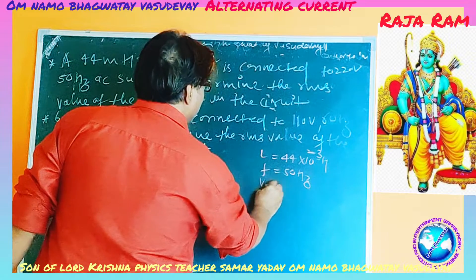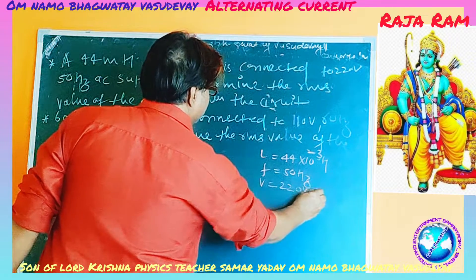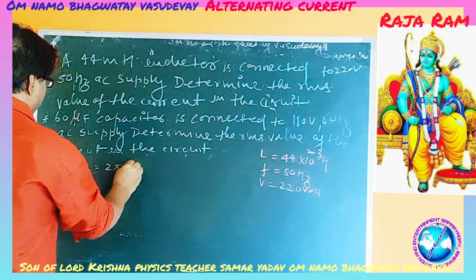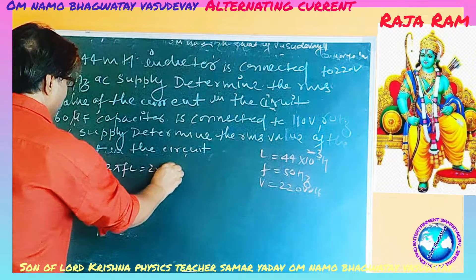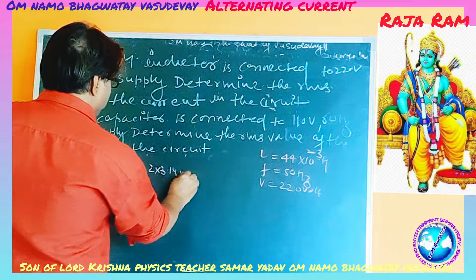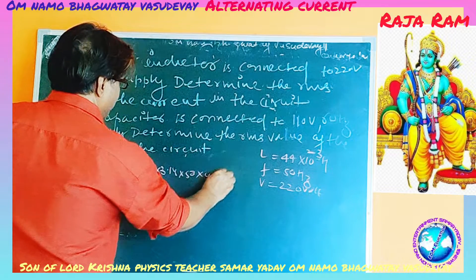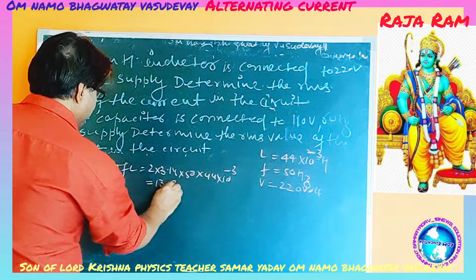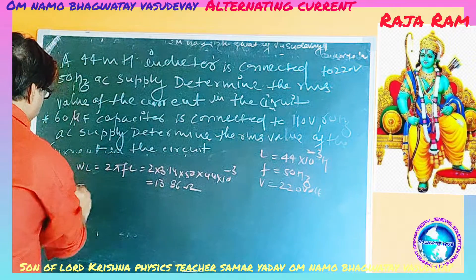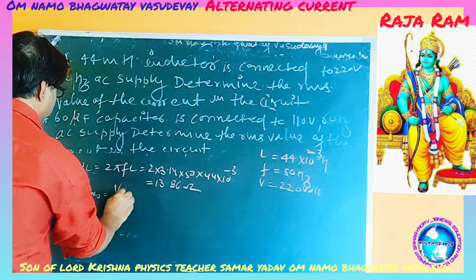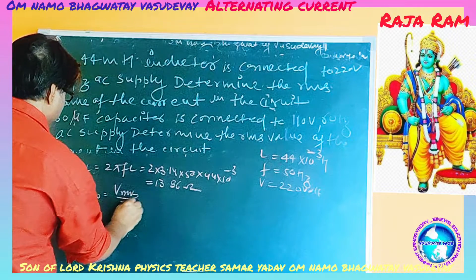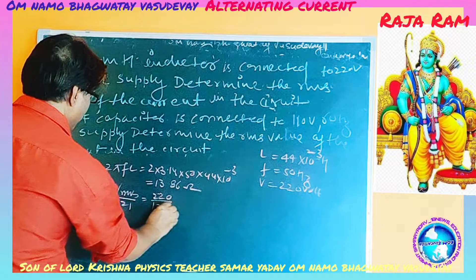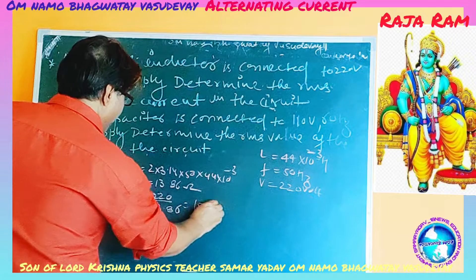The voltage V is equal to 240V. Now we look at the voltage V. IRMS is equal to VRMS divided by Z. This gives IRMS equal to 220 divided by 20.86, which is equal to approximately 15.92 A.